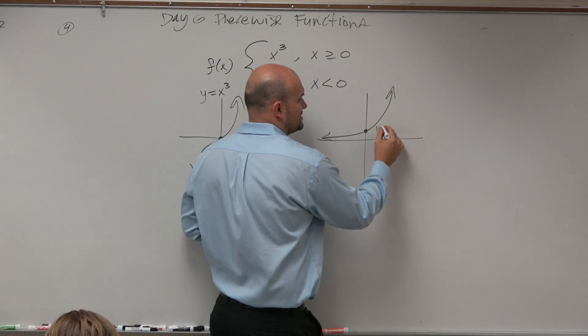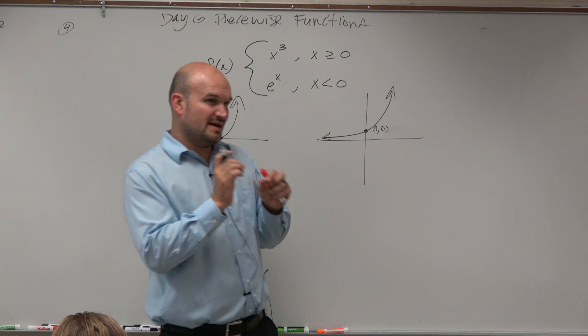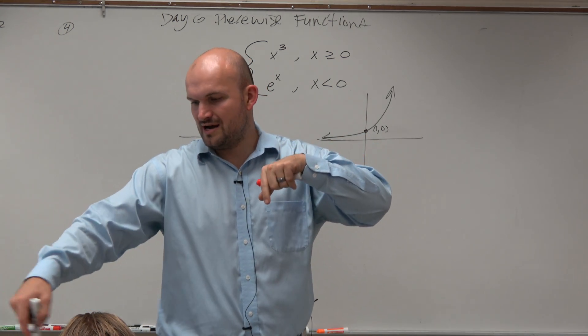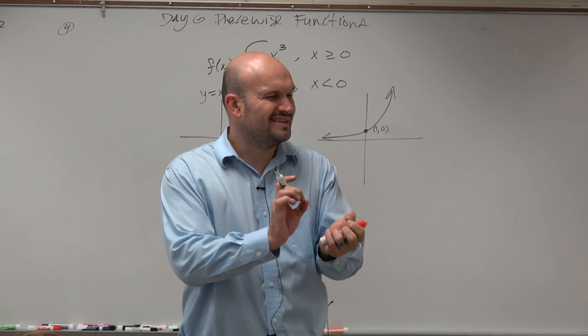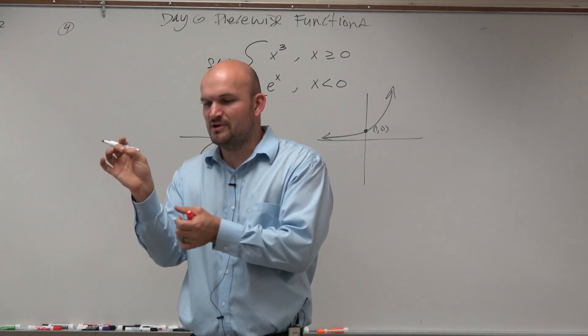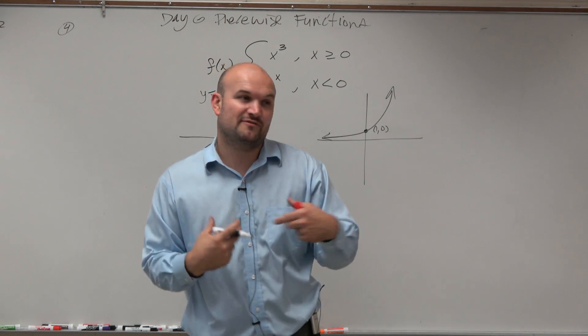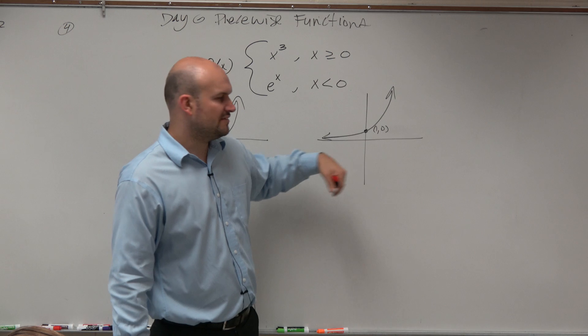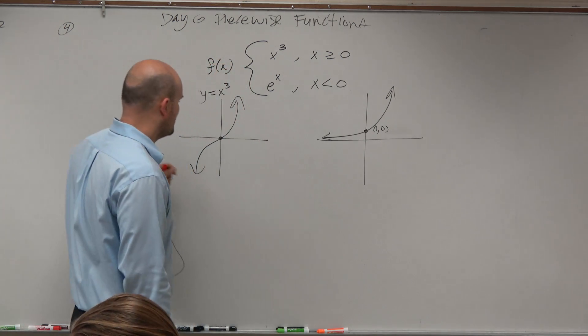But on the e to the x, you guys should know that that parent function crossed the y-axis at 1 comma 0. So on those graphs that you guys had, obviously I think you guys know where 0, 0 is, you can fill in. Majority of them have an important point at 0, 0. But for the exponential function, you should know that that point is at 1, 0. And that's just kind of important to know.